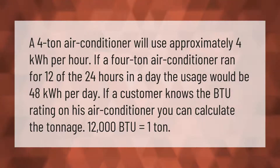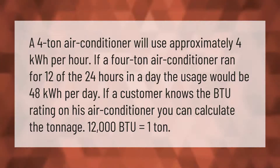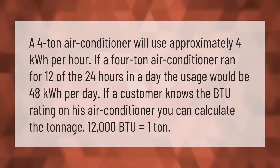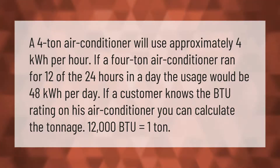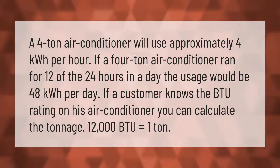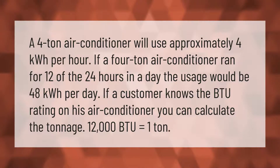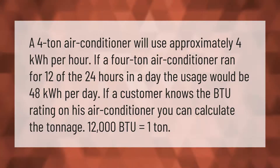A four-ton air conditioner will use approximately four kilowatt-hours per hour. If a four-ton air conditioner ran for 12 of the 24 hours in a day, the usage would be 48 kilowatt-hours per day. If a customer knows the BTU rating on his air conditioner, you can calculate the tonnage — 12,000 BTU equals one ton.